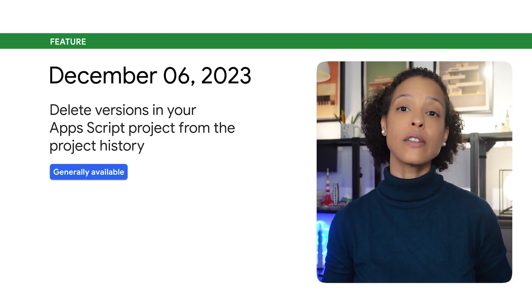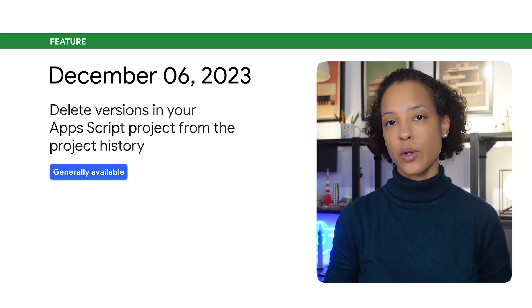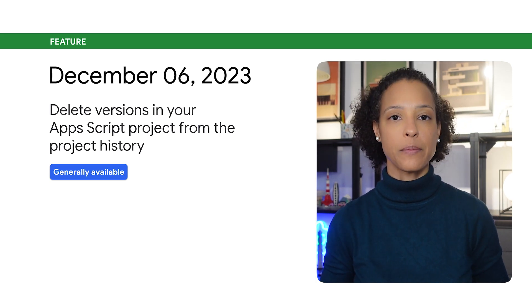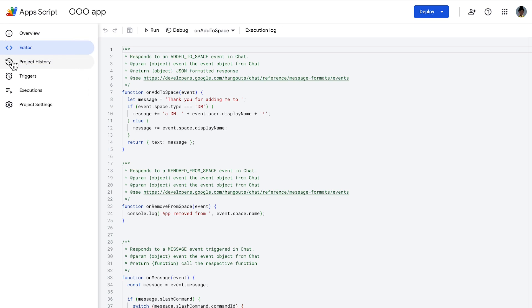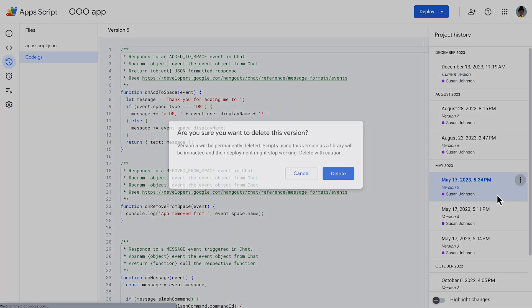You can now delete versions in your Apps Script project from the Project History page in the Apps Script IDE. Apps Script projects created after December 10, 2023 can have up to 200 versions. You can permanently delete a version if it's not in use by an active deployment. To do so, click Project History, More Actions, Delete this version, Delete.